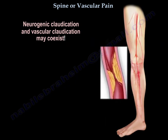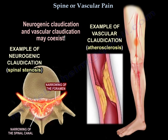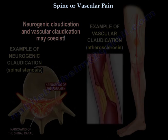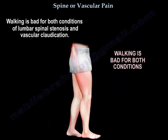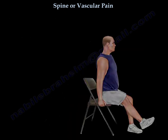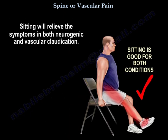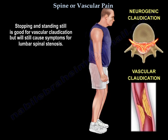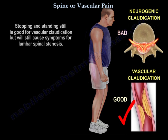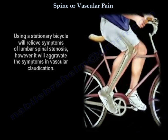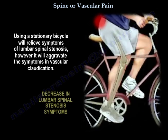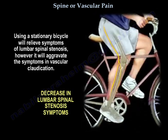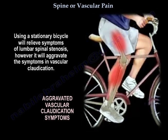Neurogenic claudication and vascular claudication may coexist. Walking is bad for both conditions, and sitting relieves the symptoms in both. Stopping and standing still is good for vascular claudication. Using a stationary bicycle will relieve the symptoms of lumbar stenosis, but it will aggravate the symptoms in vascular claudication.